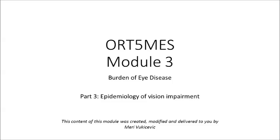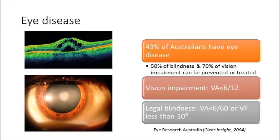Welcome to Part 3 of Module 3: Epidemiology of Vision Impairment. Almost 10 million Australians suffer from eye disease, and almost 50% of blindness and 70% of vision impairment is caused by conditions that can be either prevented or treated. This information comes from the Eye Research Australia Clear Insight report from 2004.